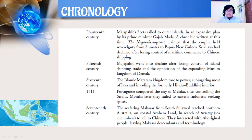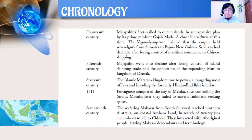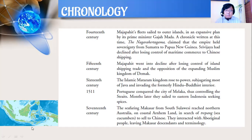17th century: seafarers from Makassar, South Sulawesi, reached northern Australia on the coast of Arnhem Land in search of trepang (sea cucumbers) to sell to China. They interacted with Aboriginal people, leaving Makassar descendants and terminology. Jadi abad ke-17 orang-orang Makassar dari Sulawesi Selatan berlayar sampai ke Australia bagian utara untuk mencari teripang yang dijual ke China, dan mereka berinteraksi dengan orang-orang Aborigin serta meninggalkan barang-barang terminologi di sana.